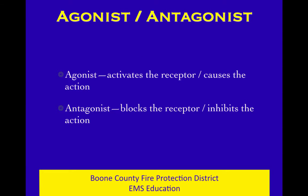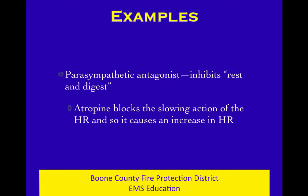Next set of terms: an agonist activates a receptor and causes something to happen, whereas an antagonist blocks that receptor or inhibits the action. So if something is called a sympathetic agonist, when that medication hits the receptor it causes sympathetic nervous system activation. A parasympathetic antagonist is going to block the rest-and-digest system. If you think of rest and digest as the brakes on a car, a parasympathetic antagonist releases the brakes — it doesn't do anything to the gas, it just releases the brakes.